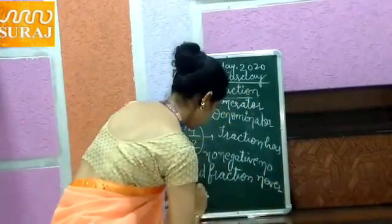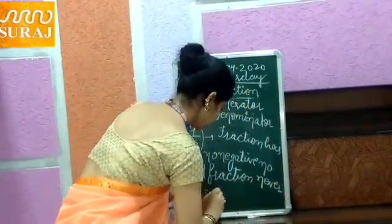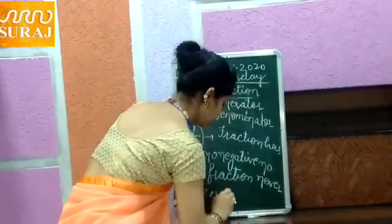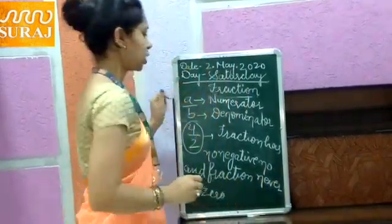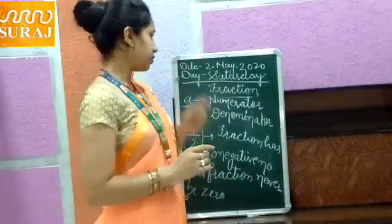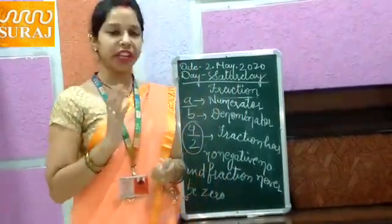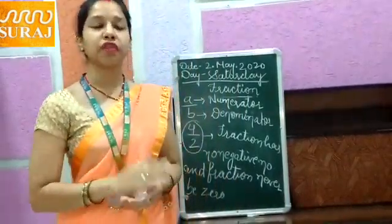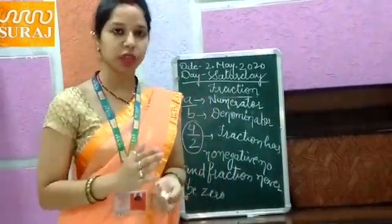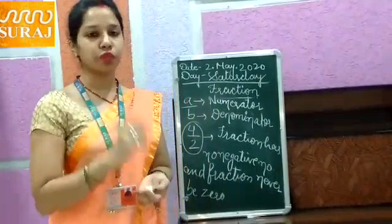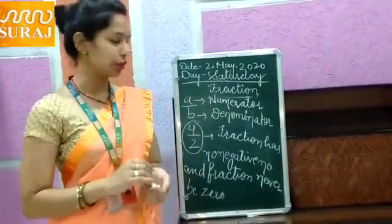Friction — B cannot be 0. Students, friction kabhi bhi negative nahi hota hai. Friction kabhi bhi 0 ki form mein nahi hota hai.